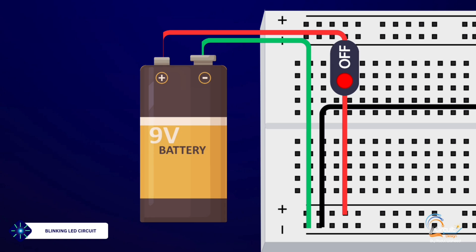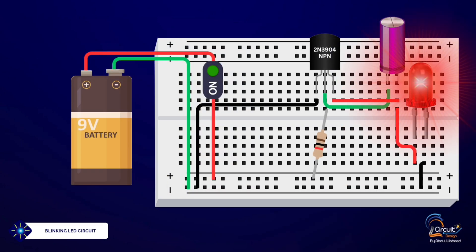Connect the 9V battery to the breadboard. The positive terminal goes to the positive rail and the negative terminal to the ground rail.